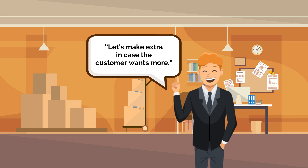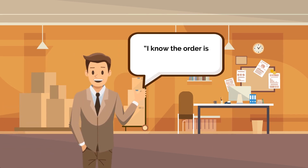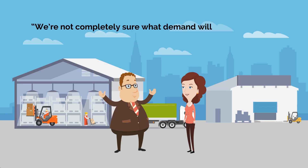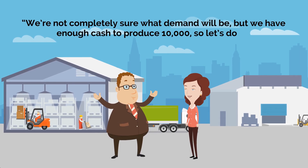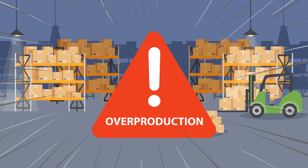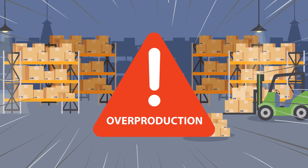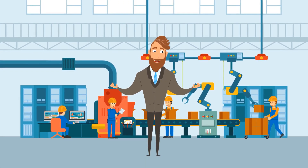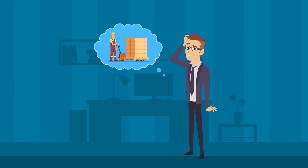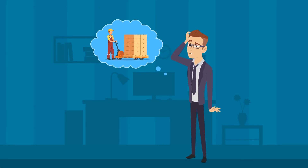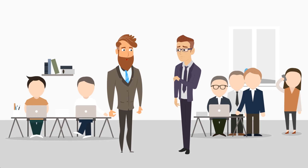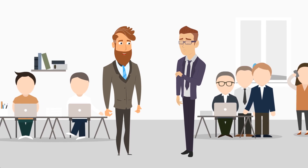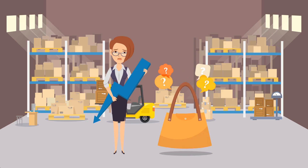Phrases like 'let's make extra in case the customer wants more' or 'the order is for 100 but let's run 120 just in case' are signs of overproduction. Overproduction is a beast that destroys profitability — it is an enemy of every business, but particularly caustic to companies that manufacture product. Assuming you will need more of this or that is almost always wasteful. Even with good projections, if sales come in at or under your projection, you're left holding a big old bag of lost profits.